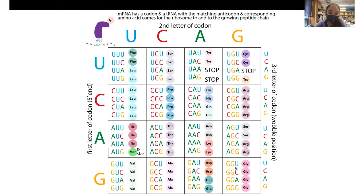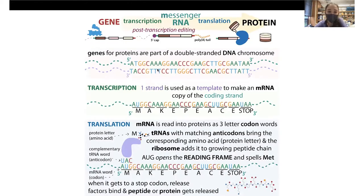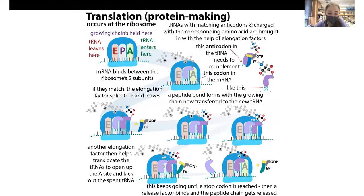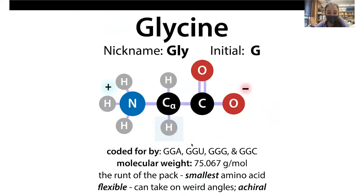Codons are basically how the letters are spelled when the ribosome reads out the protein-making instructions — what order to put the amino acids in is decided by the codon, and a tRNA brings the amino acid to be added. Glycine's codons are GGA, GGU, GGG, and GGC. So if any of those show up as the ribosome moves along, the tRNA carrying glycine will come and bring it.